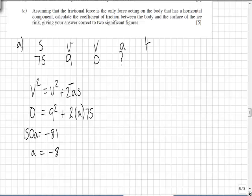So A equals minus 81 over 150, giving a deceleration of minus 0.54 meters per second squared.